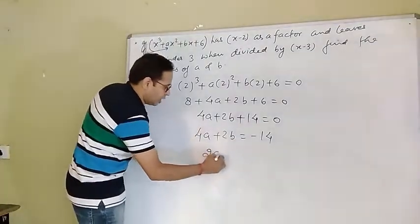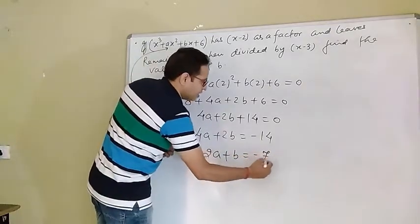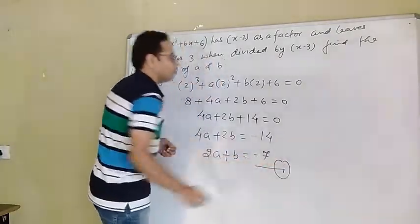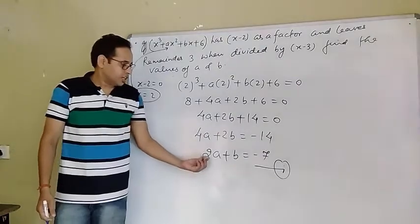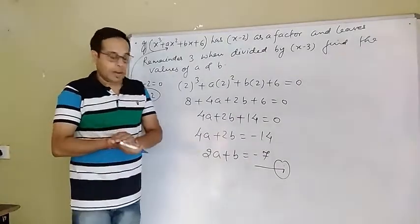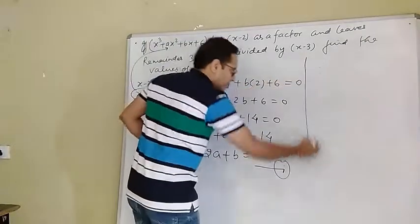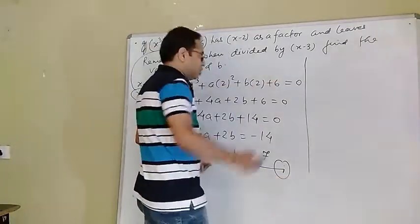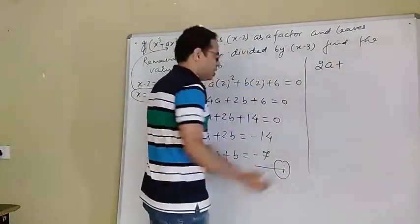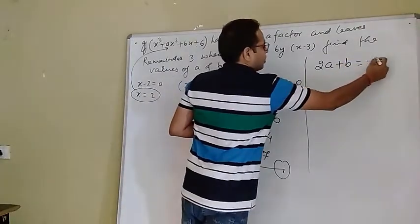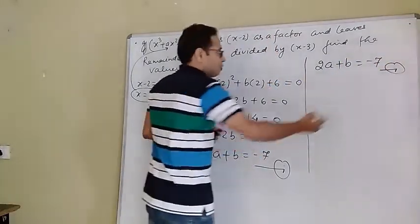Dividing the entire equation by 2, we get 2a + b = -7. Let this be equation number 1. So we have got one equation in a and b: 2a + b = -7.